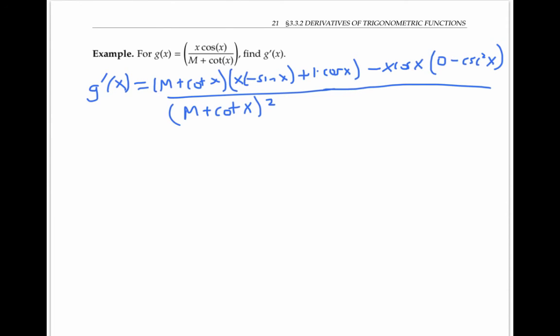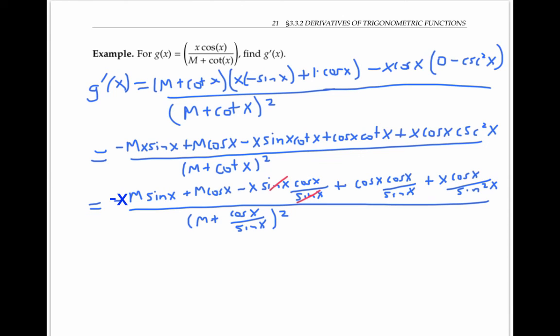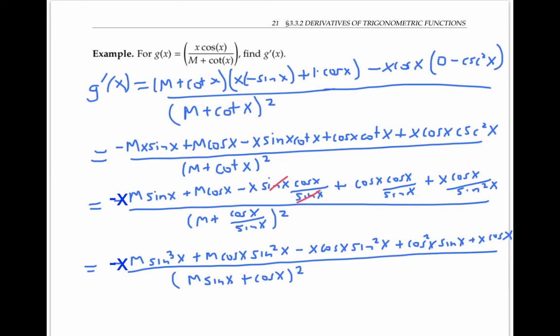So I found the derivative. I'm going to go ahead and simplify it a little bit by multiplying out, then rewriting everything in terms of sine and cosine, and then multiplying the numerator and denominator by sine squared of x. We have a somewhat simplified expression for the derivative.